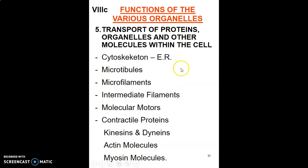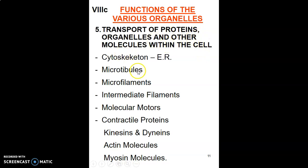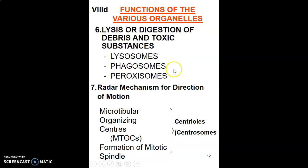After packaging, vesicles are transported to the cell membrane or to other organelles. What carries out transport within a cell? The cytoskeleton. The cytoskeleton comprises microtubules, microfilaments, and intermediate filaments. These contain contractile proteins — kinesins, actin, myosin molecules — that enable transportation and movement.